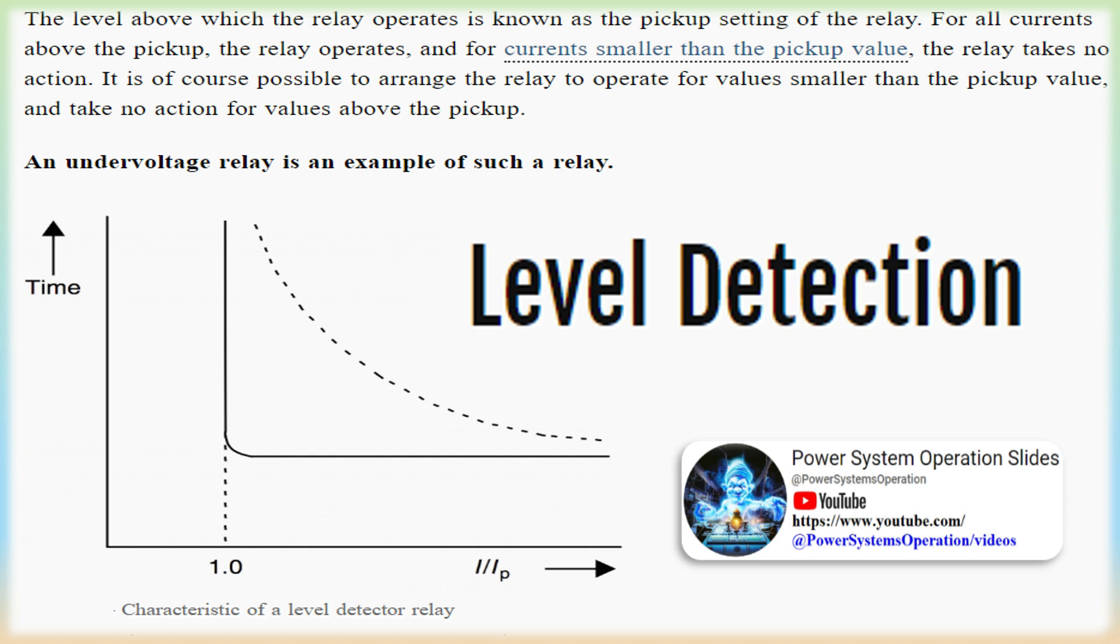Consider the motor connected to a 4 kV power system as shown in figure. The full load current for the motor is 245 A. Allowing for an emergency overload capability of 25%, a current of 1.25 into 245 equal 306 A or lower should correspond to normal operation.